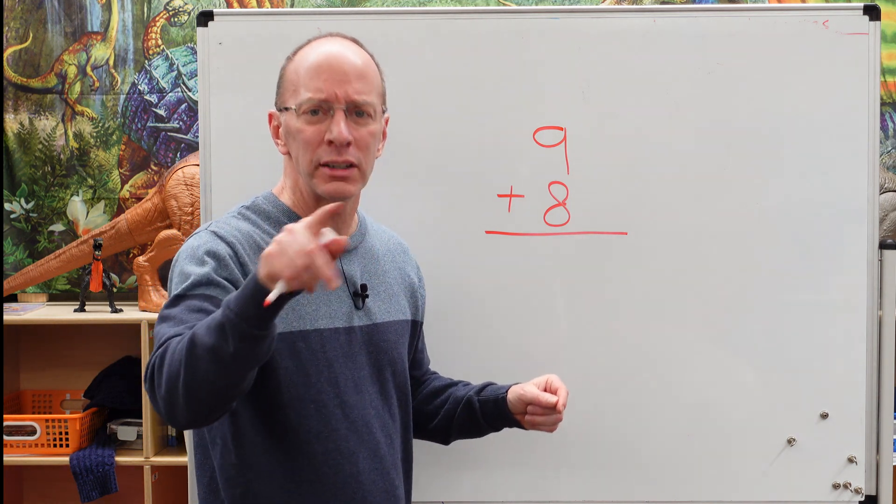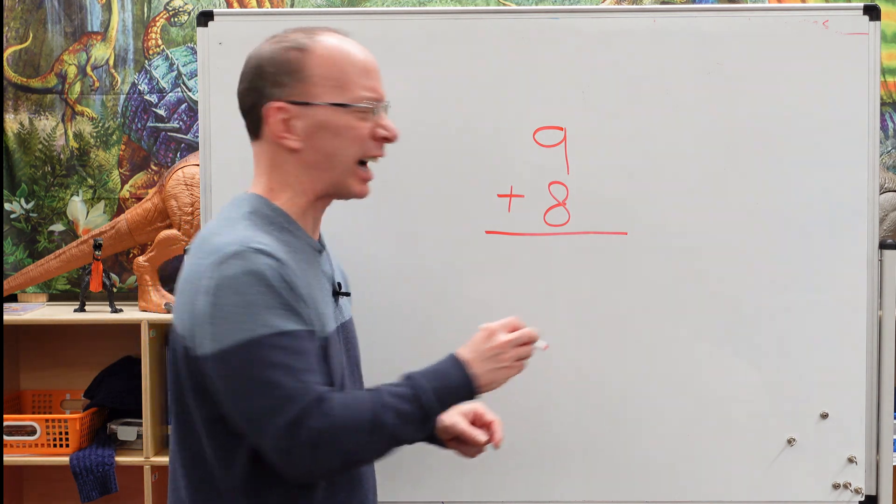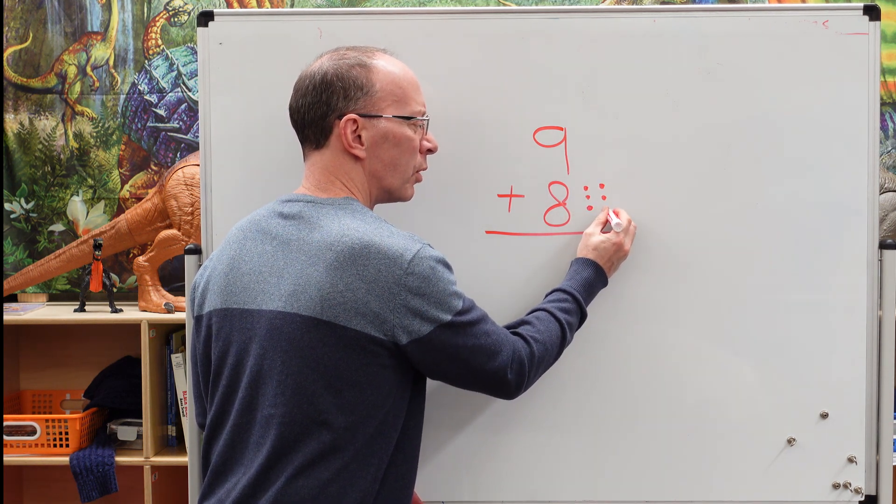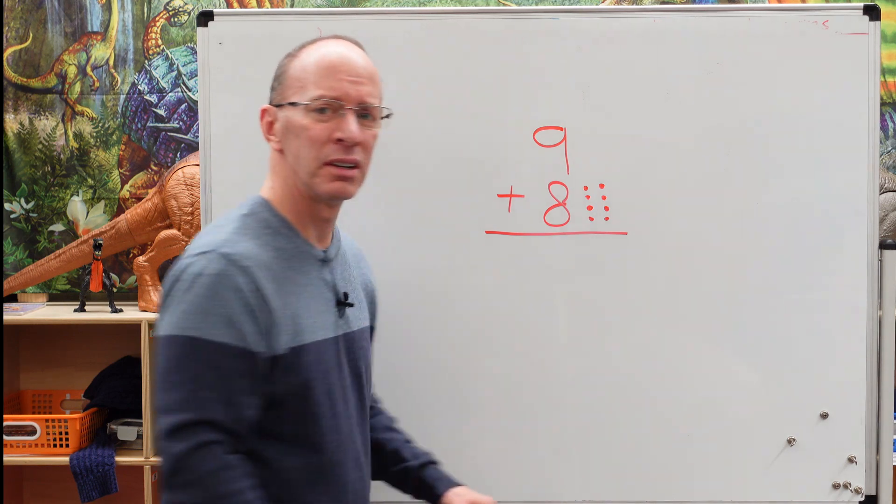Eight is one, two, three, four, five, six, seven, eight. I like to put dots there. All right. So you can just put eight dots. I like to put them in order in a row. Just kind of keep it simple.